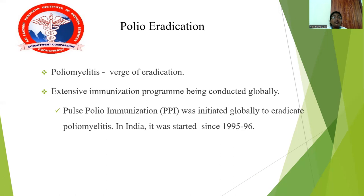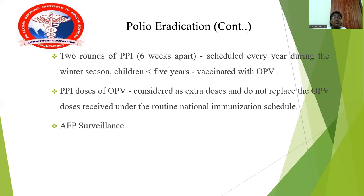Poliomyelitis is on the verge of eradication globally, with extensive immunization programs being conducted. Pulse polio immunization was initiated globally since 1995–96. Two rounds of pulse polio immunization are conducted six weeks apart, scheduled annually during the winter season, vaccinating children under five years with oral polio vaccine. Pulse polio immunization doses are considered extra doses and do not replace doses received under the routine national immunization schedule. Acute flaccid paralysis surveillance is also conducted.